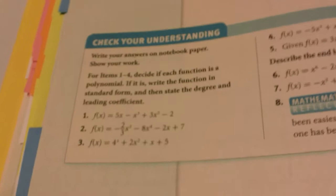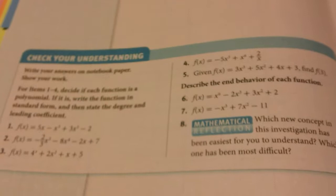Questions 6 and 7. It says, describe the end behavior of each function. Now, these are polynomials because they have positive exponents. None of the terms are dividing, and we have no negative exponents. So now, I know that you guys don't have calculators because I locked them up.